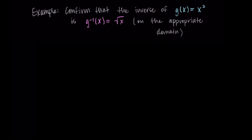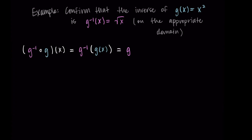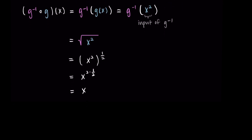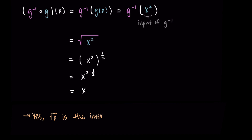Now we do g inverse of g of x. Here g of x is x squared, so this becomes my input for the inverse function. The inverse is the square root of x, but instead of x, we use x squared as our input. So we take the square root of x squared. We have x squared, and taking the square root is the same as raising it to the one-half power, so x squared to the one-half power. When I take a power to a power, I multiply those exponents: x to the power of 2 times one-half. And 2 times one-half is 1, so x to the 1 is x. By doing the composition both ways, we see that the square root of x is in fact the inverse of x squared.